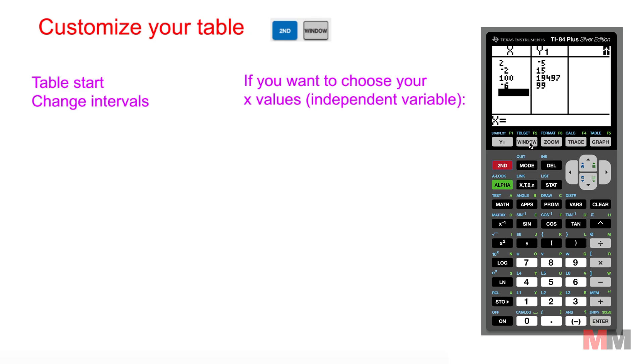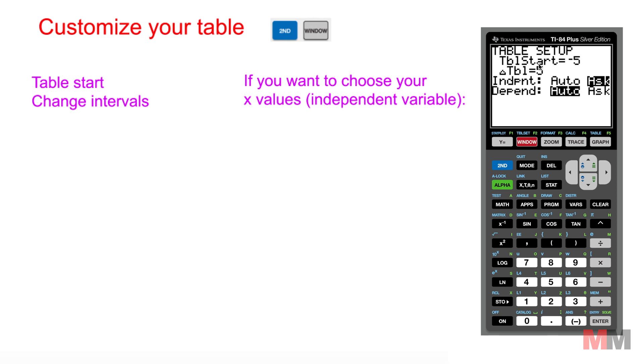So let's just recap that. 2nd window are my options: table start, where you want your table to start; change the table intervals, what you want your table values to count by; and if you don't want it to automate and you want it to ask your own numbers, you just change this independent option right here from auto to ask.